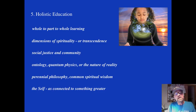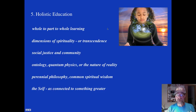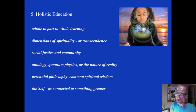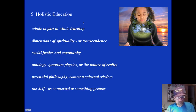Holistic education involves a lot of different things. It's not one thing like behaviorism or cognitive psychology, but it could involve some or all of these: whole-to-part learning, dimensions of spirituality and transcendence, social justice and community, ontology — that means the nature of reality — and quantum physics, the idea that everything is connected.